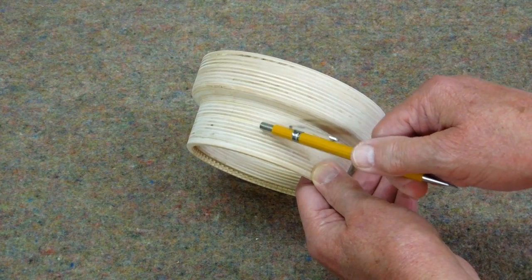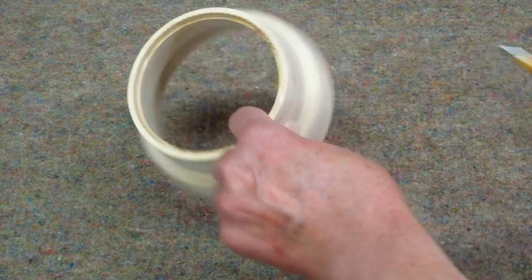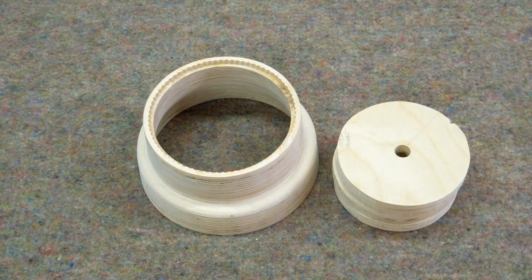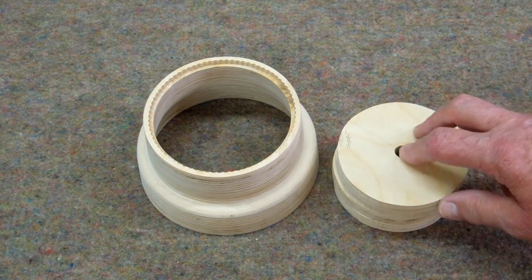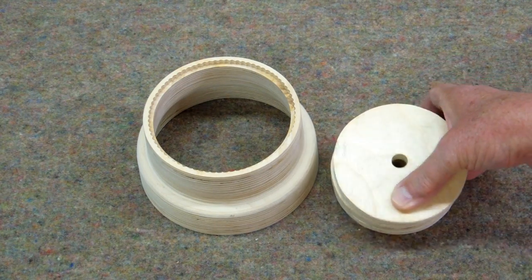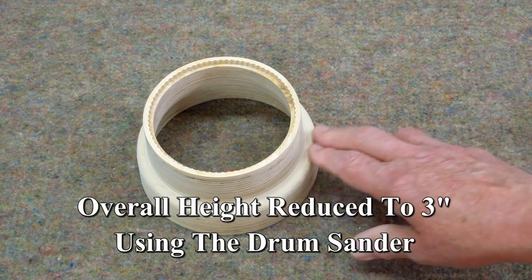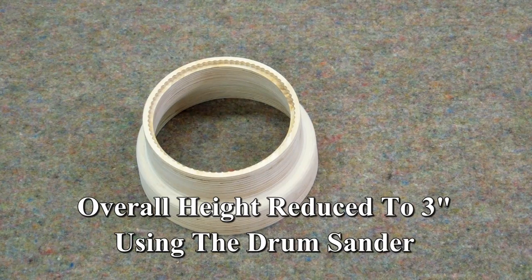I then glued these four together and these three and cut the centers out on the scroll saw. This is two inches thick and you can just barely cut that out on a scroll saw. Down here it was an inch and a half thick and that was pretty easy.